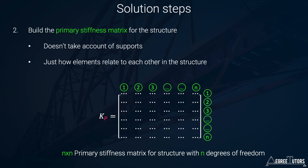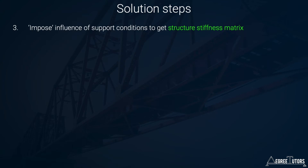For a pin-jointed structure like what we're analyzing in this course, the number of degrees of freedom is the number of nodes multiplied by the degrees of freedom per node. Each node has two degrees of freedom — horizontal and vertical movement. The number of degrees of freedom determines the size of the primary stiffness matrix. That's step two.